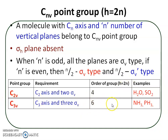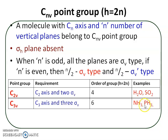This means there are six symmetry elements or operations in this point group. Examples are trigonal pyramidal molecules like ammonia and phosphine — these are examples of C3V point groups.